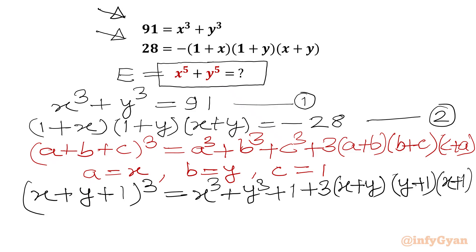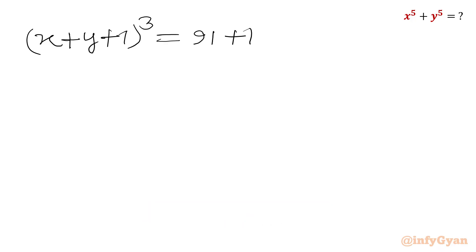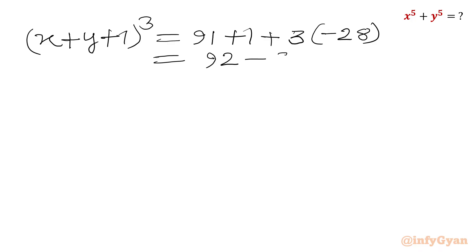Now we apply equation 2 and equation 1. The term 3(1 + x)(1 + y)(x + y) equals 3 × (−28), and x³ + y³ = 91. So (x + y + 1)³ = 91 + 1 + 3(−28) = 92 − 84 = 8.